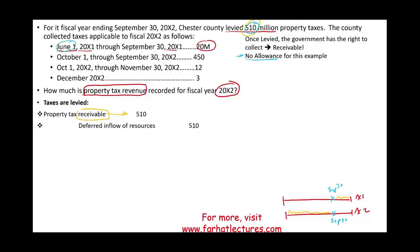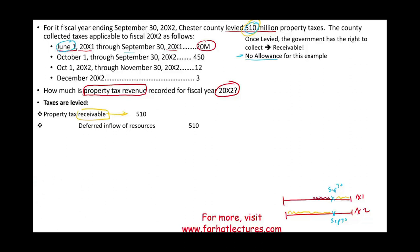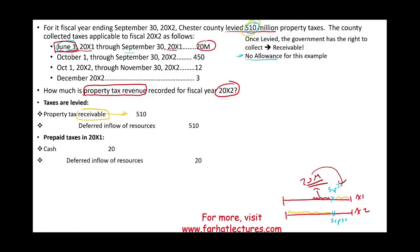From June 1st through September 30th — before the fiscal year started — some taxpayers paid $20 million. Some people do prepay their taxes, but it's not revenue until the year kicks in. When those individuals prepay, we debit cash and credit deferred inflow of resources — it's not revenue yet.